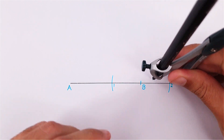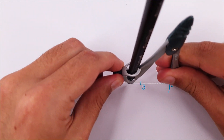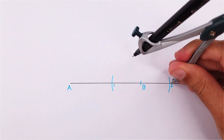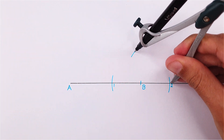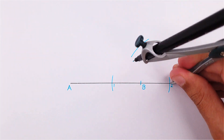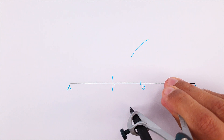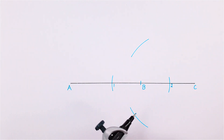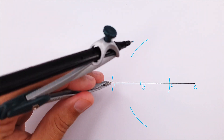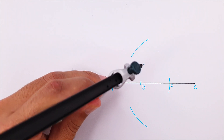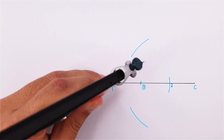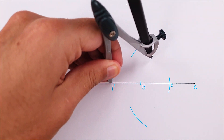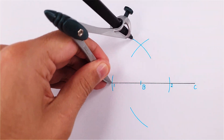Next, place your compass on point 2 and adjust it to more than half the distance towards point 1 and draw two arcs above and below point B. Using the same measurement, do the same on point 1.